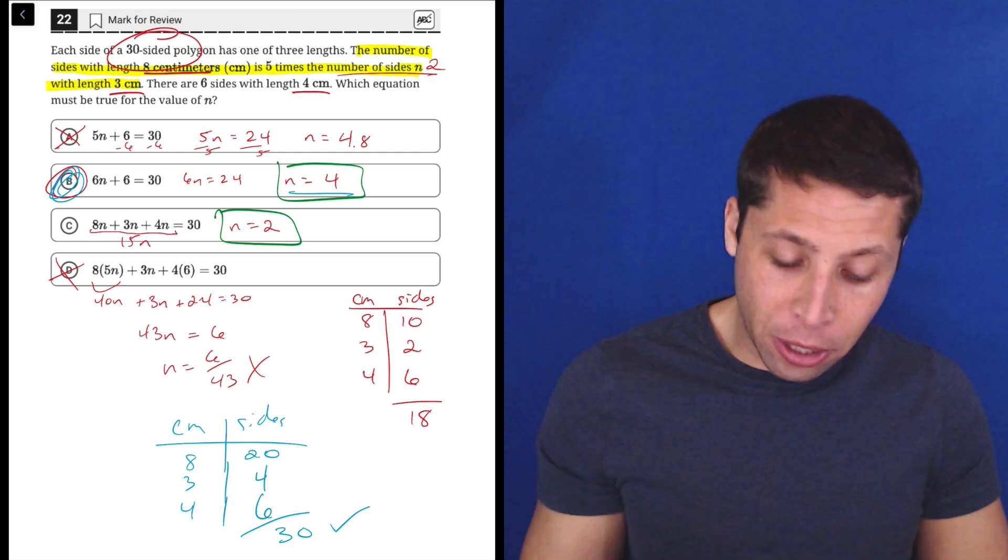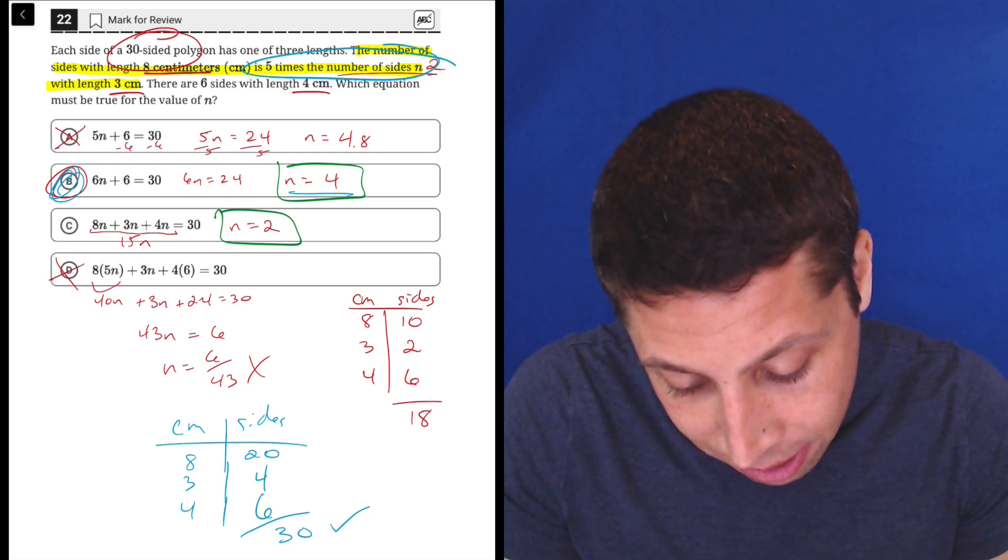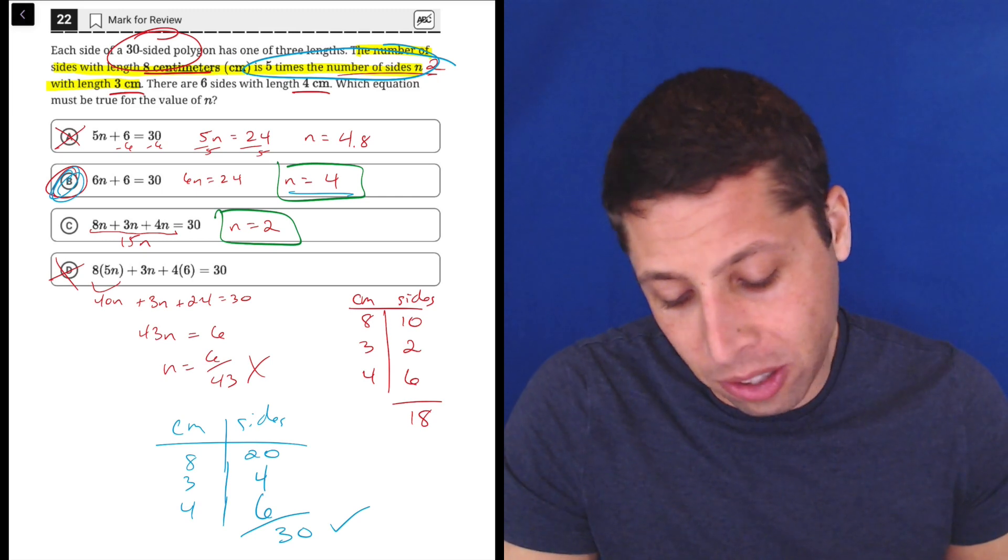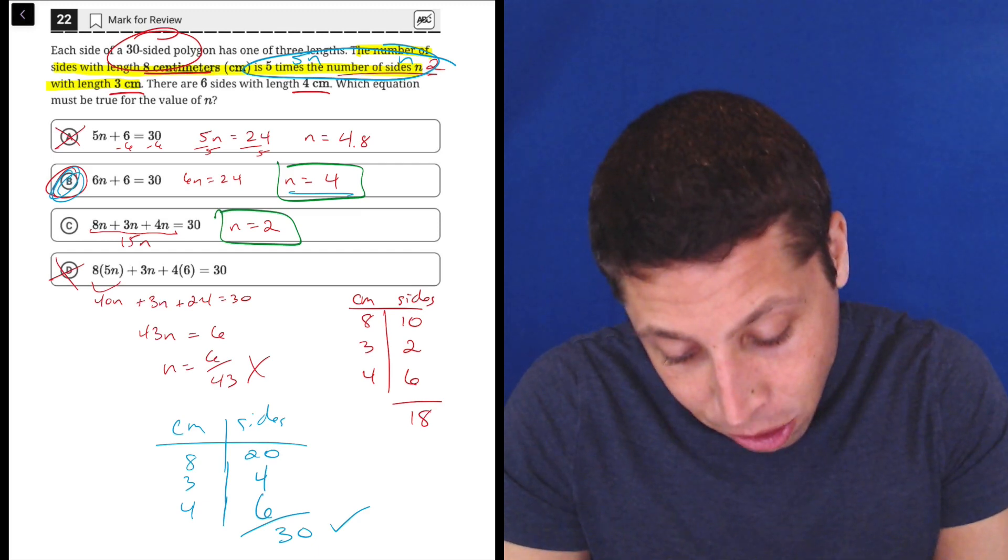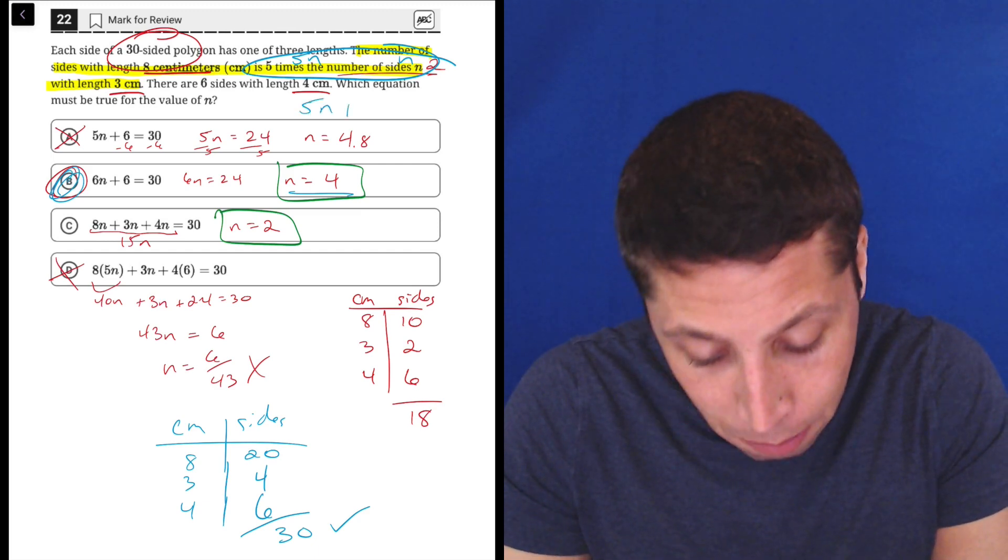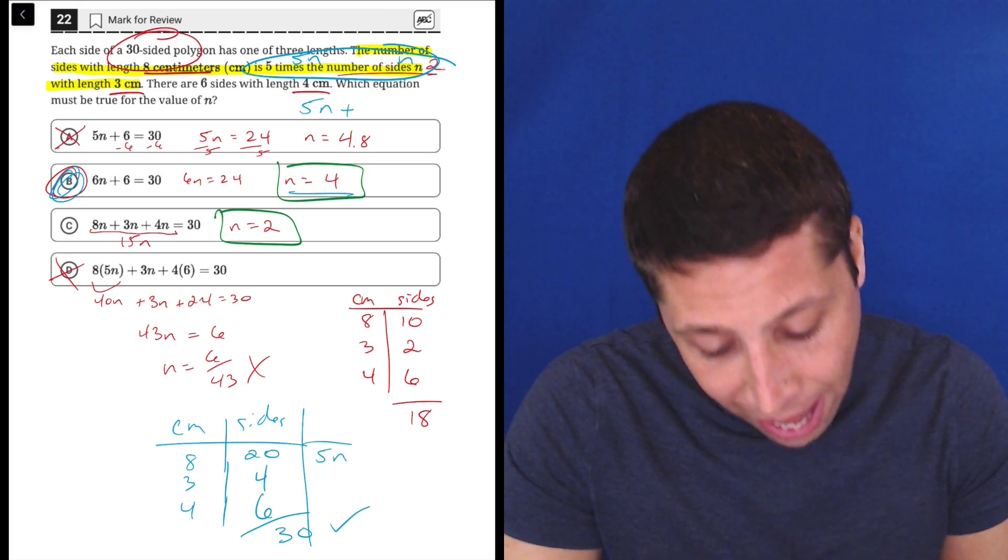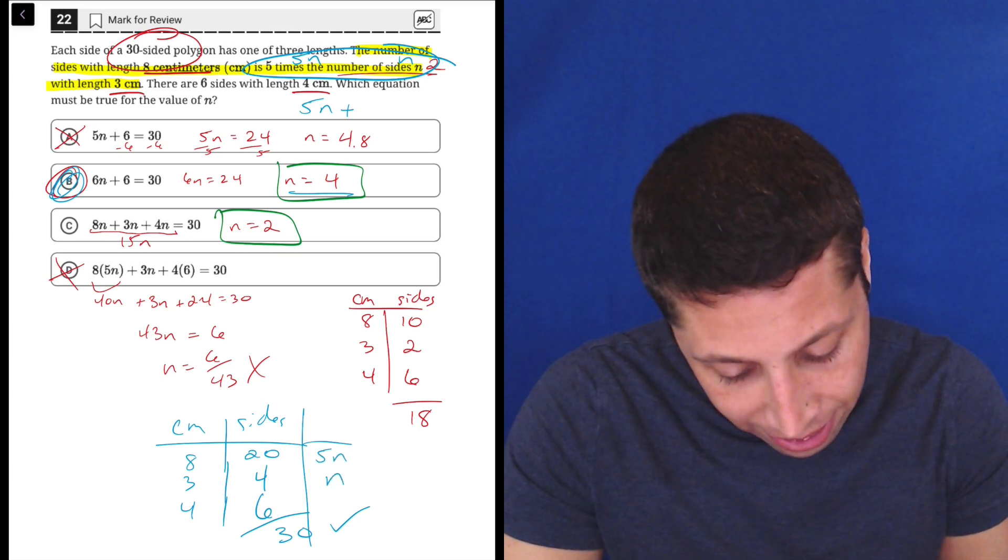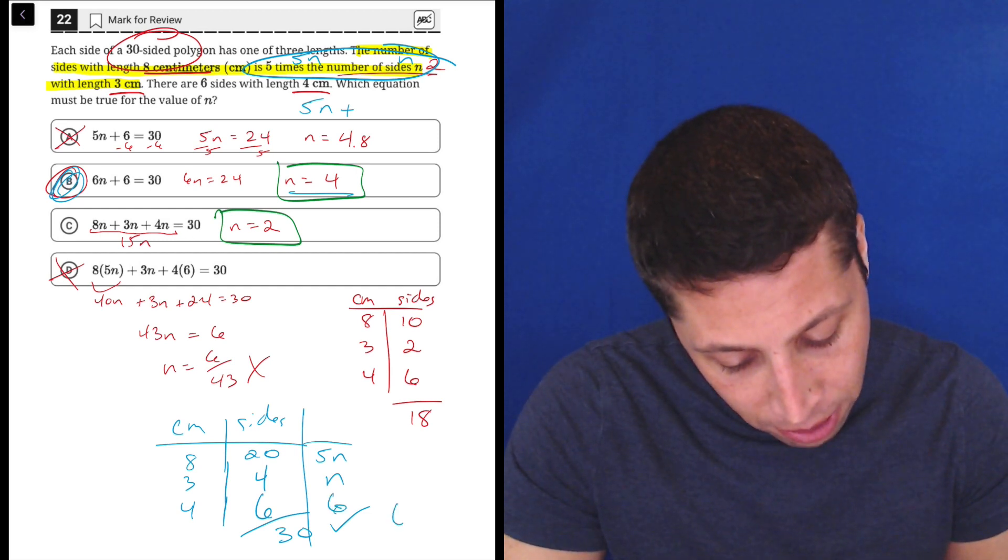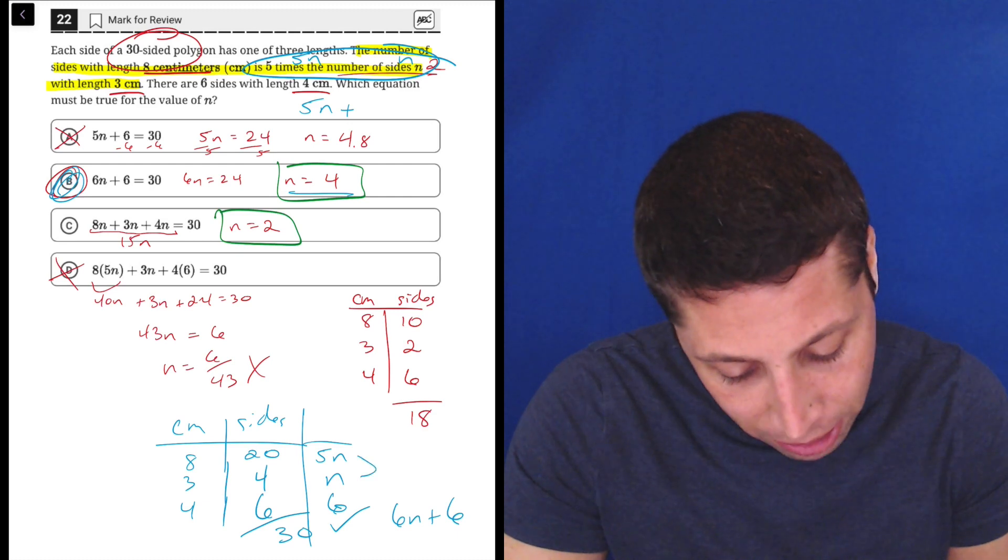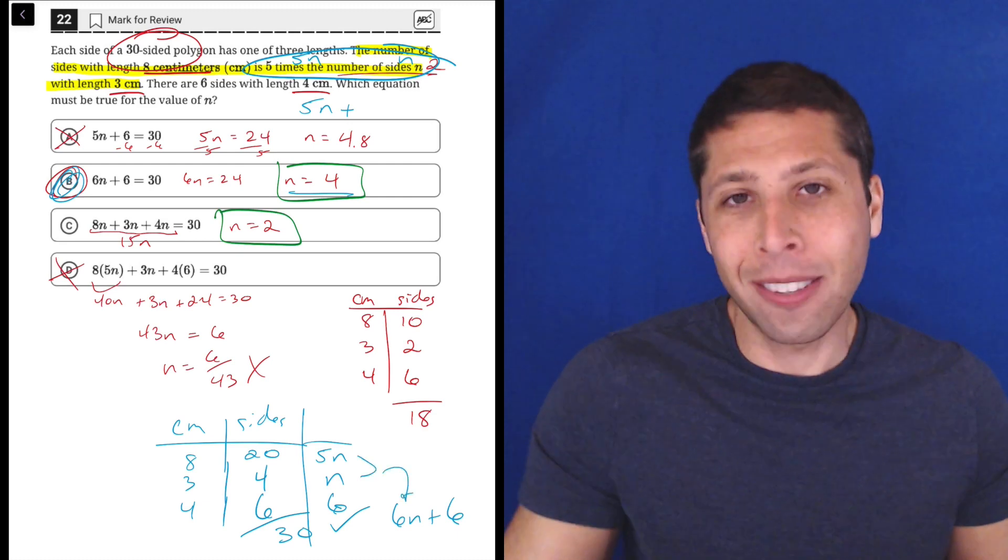Now some of you probably could have gotten this just by kind of understanding that when they tell us this fact, 5 times the number of sides, we would just say, okay, that's 5n, and this is n. So 5n plus, or here, let me do it this way. The number of 8 centimeter sides is 5n. The number of 3 centimeter sides is n. And the number of 4 centimeter sides they told us is just 6. So right there, we would have 6n plus 6 because we can combine these two. We can't combine it with the 6. Yeah, that's much easier.